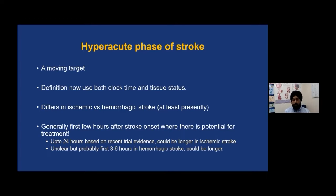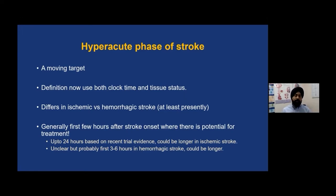There are patients who can have variable stroke sizes at different time points because of different collaterals, or their clot may allow some flow through it. Not everybody behaves in a similar fashion. Therefore, it is important not only to look at the clock, but also at the tissue itself. This is why there has been a lot of focus recently on imaging-based patient selection, because there is a lot of variance based purely on the external clock.